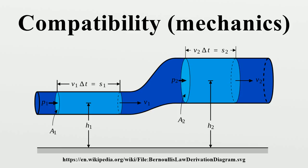In the continuum description of a solid body, we imagine the body to be composed of a set of infinitesimal volumes or material points. Each volume is assumed to be connected to its neighbors without any gaps or overlaps. Certain mathematical conditions have to be satisfied to ensure that gaps or overlaps do not develop when a continuum body is deformed. A body that deforms without developing any gaps or overlaps is called a compatible body. Compatibility conditions are mathematical conditions that determine whether a particular deformation will leave a body in a compatible state.